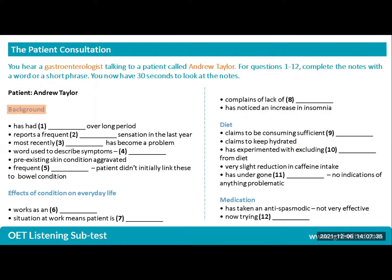First, the patient will give background information about his condition. Then you will hear information about his work and how the condition affects it. As this is a gastroenterology consultation, the conversation moves into diet-related information. And finally, just like any patient consultation, you will hear details of medication.